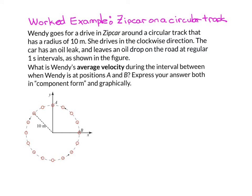And the question is, what is Wendy's average velocity between the time when she's located at point A and when she's at point B? We'll assume that she's traveling around the track in a clockwise direction. Well, to answer this, we have to remember what the definition of average velocity is.